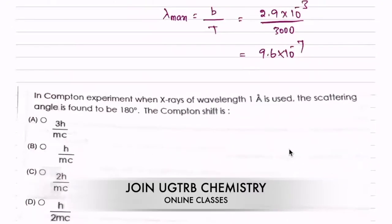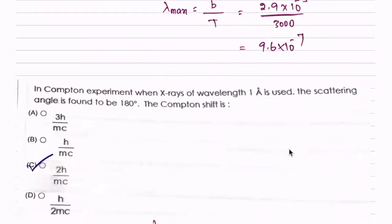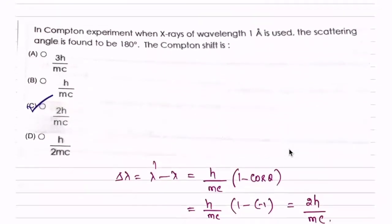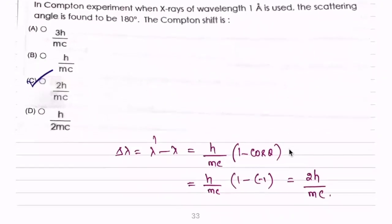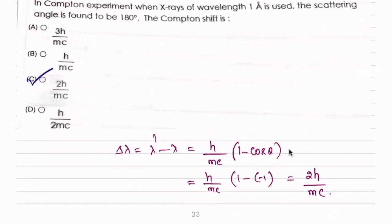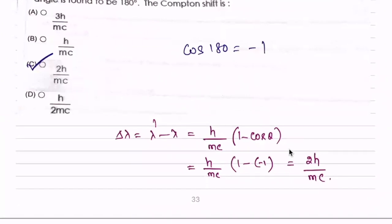Option C is the correct answer. In the Compton shift, delta lambda equals lambda' minus lambda, which is h/mc multiplied by (1 minus cos θ). Here, cos 180° equals minus 1, so minus of minus 1 gives 1 plus 1, which equals 2h/mc.